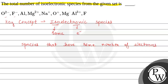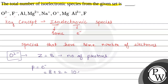Now let us start from the given species. The first species given is oxygen 2 negative. To find the number of electrons, we look at oxygen's atomic number, Z, which is 8. For a neutral species, the atomic number equals the number of electrons. But here the species is O²⁻, which means 2 electrons have been added. So the total number of electrons is 8 plus 2, which equals 10 electrons.